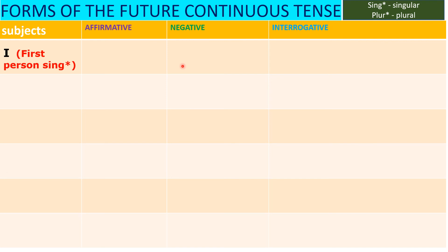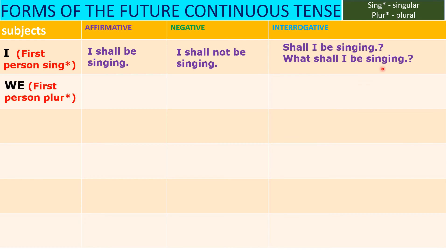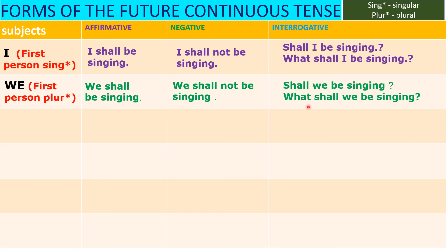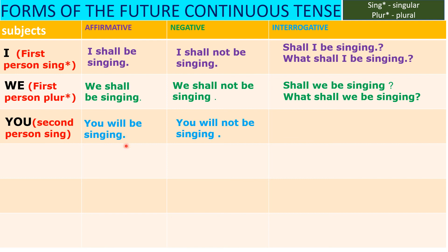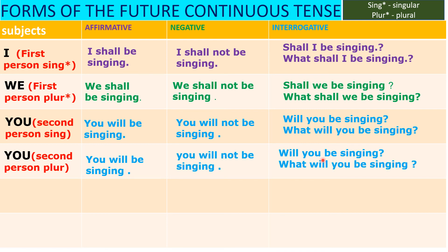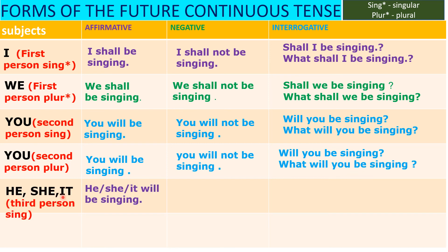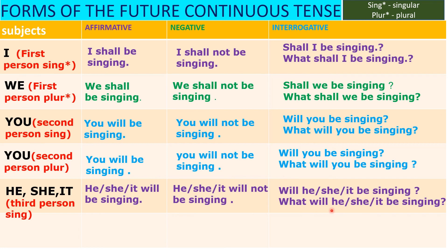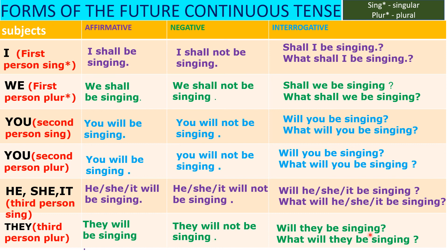Let's see the conjugation of future continuous tense. First person: 'I shall be singing.' Negative: 'I shall not be singing.' Question: 'Shall I be singing?' Wh-question: 'What shall I be singing?' Second person: 'You will be singing.' Negative: 'You will not be singing.' Question: 'Will you be singing?' Wh-question: 'What will you be singing?' Third person singular: 'He will be singing,' 'She will be singing,' 'It will be singing.' Negative: 'She will not be singing.' Question: 'Will she be singing?' 'What will she be singing?' Third person plural: 'They will be singing.' 'Will they be singing?' 'What will they be singing?'